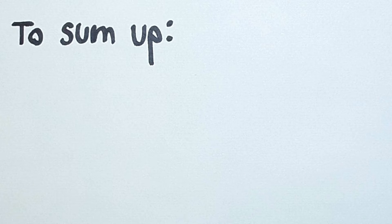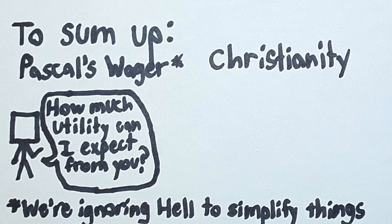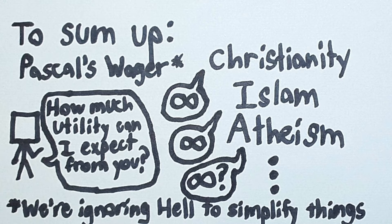To sum up, I'm going to explain how inverting the wager changes the argument. In the normal Pascal's wager, I'm walking up to different worldviews and saying, how much utility can I expect from you? Every worldview promises me infinite utility because there is some probability that there is a god who will reward just those people with that worldview. That makes all options completely indistinguishable.